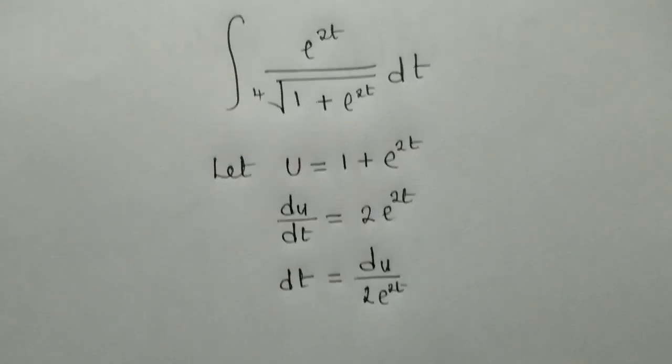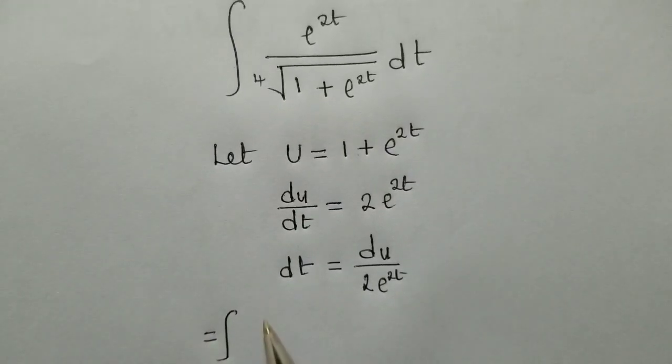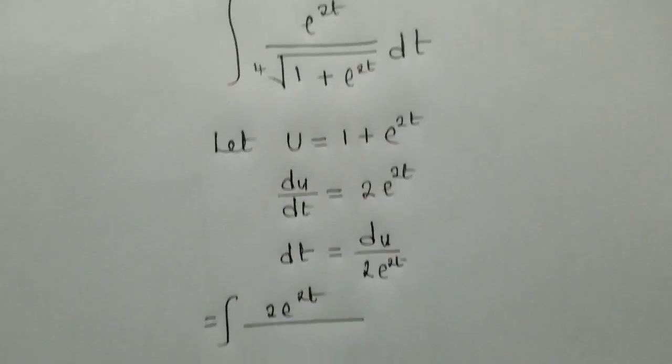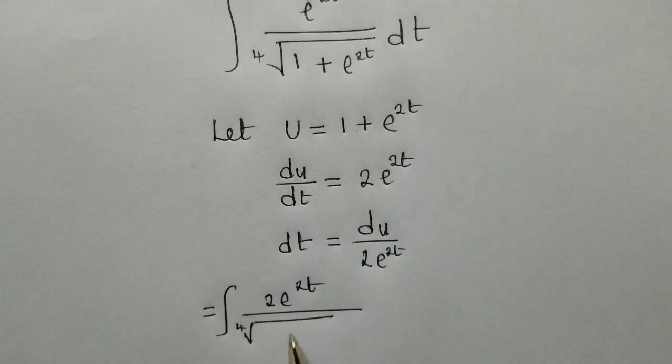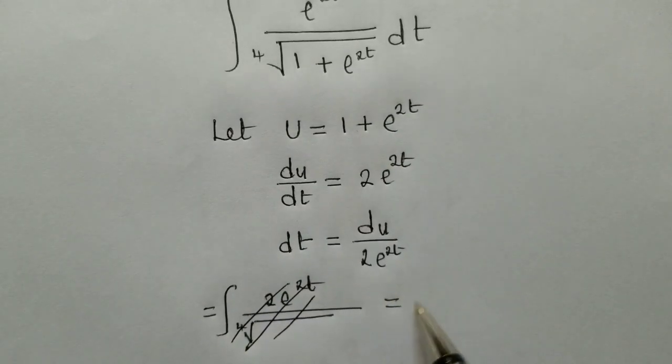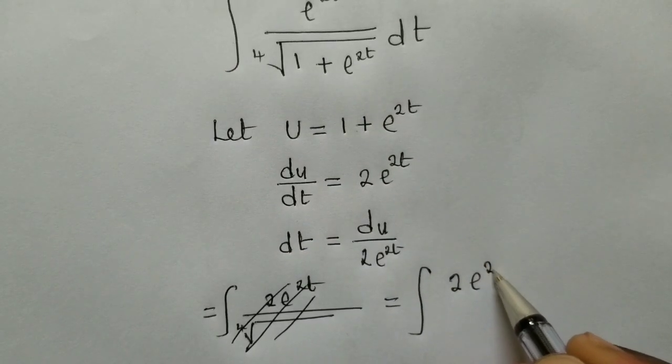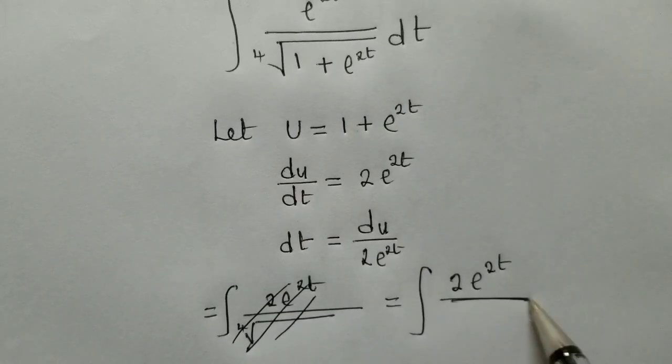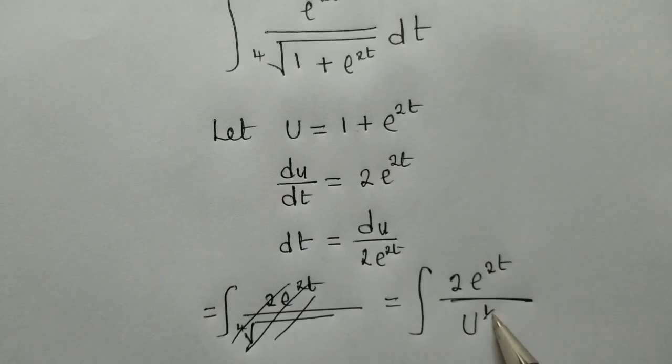Next, we just substitute. So this will just be equal to integral over 2 e. We know that here we have 2 e power 2. Then we say over, we have the fourth root. Fourth root of, actually here, we say integral over 2 e power 2t over u power 1 over 4.